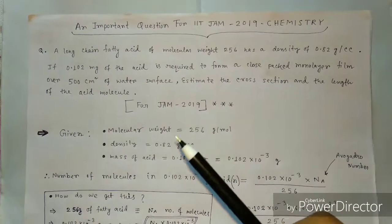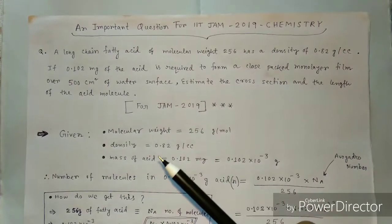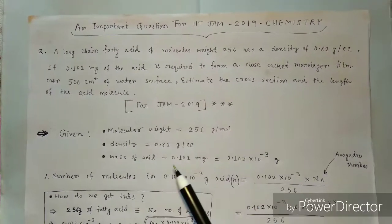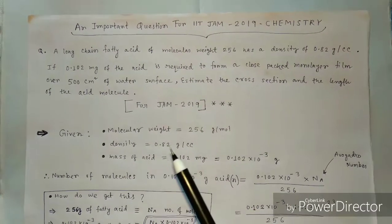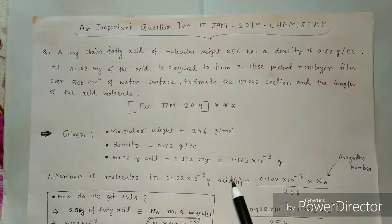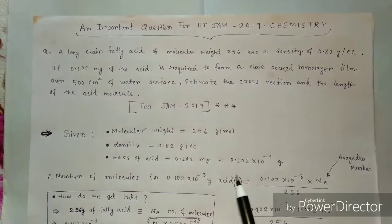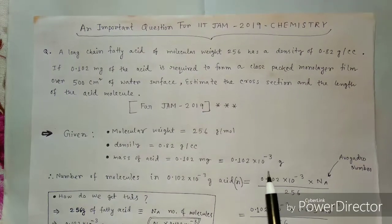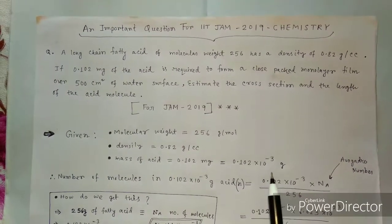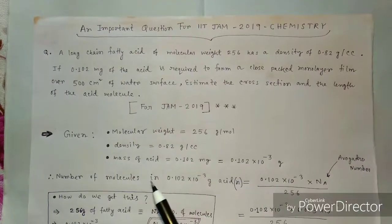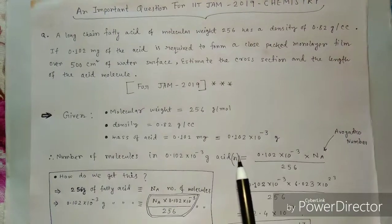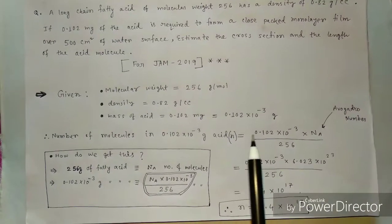Now let's solve the question. It is given that the molecular weight is 256 gram per mole, density is 0.82 gram per cc, and the mass of the acid is 0.102 milligram, that is 0.102 × 10⁻³ gram when converted to grams.